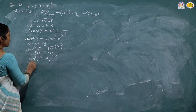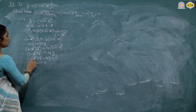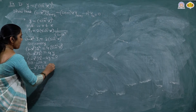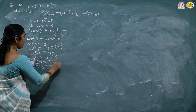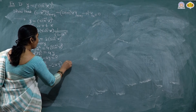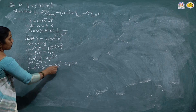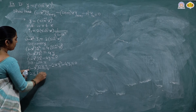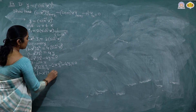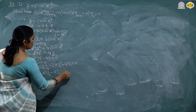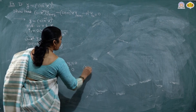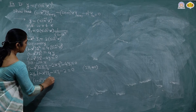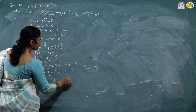Again differentiate to get y2. Differentiating with respect to x using the product rule: (1 - x²) times 2y1·y2 minus 2x·y1² minus 4y1 equal to 0. Taking y1 common: y1 times [(1 - x²)·2y2 - 2x·y1 - 4] equal to 0. As 2y1 is not zero, we get (1 - x²)·y2 - x·y1 - 2 equal to 0. Now, observe that we want to reach n+2, and we currently have y2.